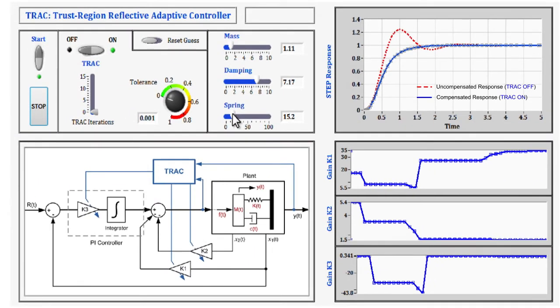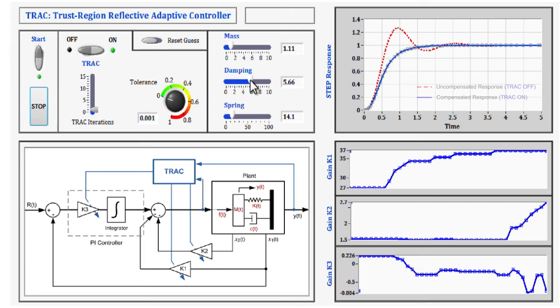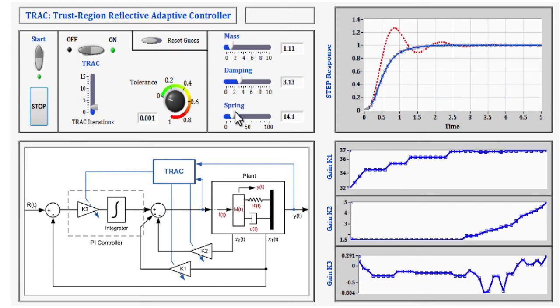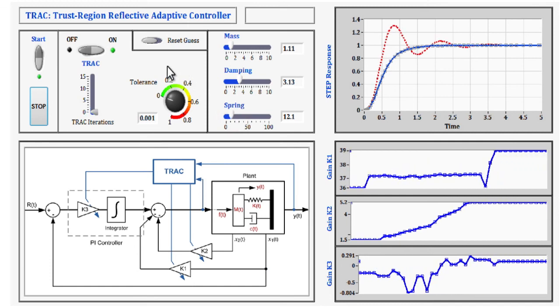This leads us to the conclusion that TRAC offers significant advantages to control systems that are subject to parametric uncertainties or inaccuracies in the plant model, and whereby a time-varying system can be automatically tuned to exhibit a time-invariant response.